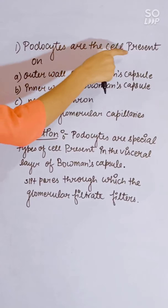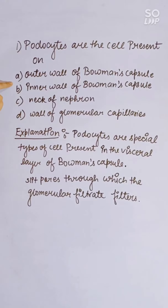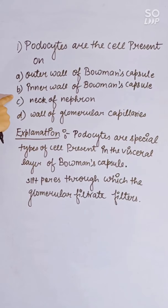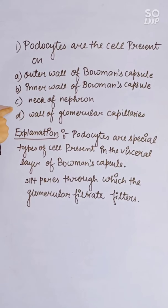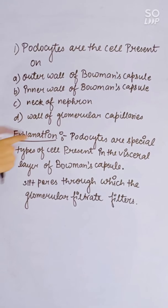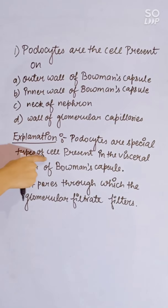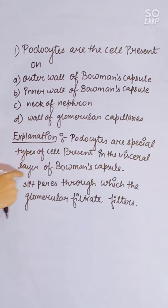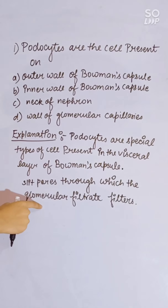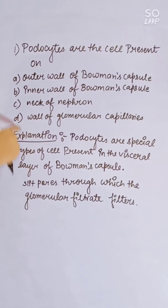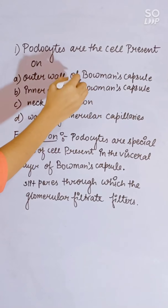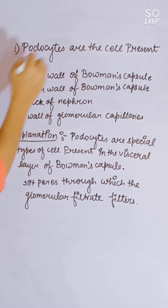Podocytes are the cells present on: outer wall of Bowman's capsule, inner wall of Bowman's capsule, neck of nephron, or wall of glomerular capillaries. Podocytes are a special type of cell present in the visceral layer of Bowman's capsule, with slit pores through which glomerular filtrate occurs. Correct answer is inner wall of Bowman's capsule.